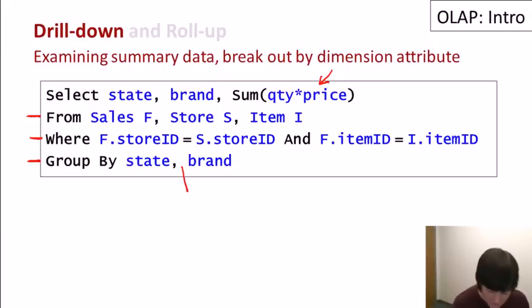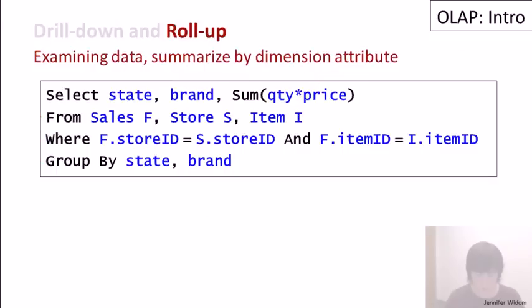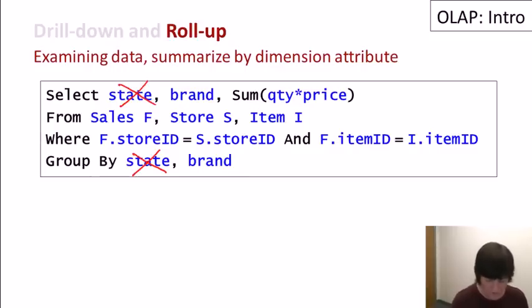So if we added, for example, category, when we add another grouping attribute, that gives us more data in the answer, more detail in our data. Roll up is exactly the opposite. Roll up says we're looking at data and we decide we have too much detail, and we want to summarize. And summarizing is simply a matter of removing a group by attribute. So if we took out state, then now we'll only see our data summarized by brand rather than broken out into state and brand.